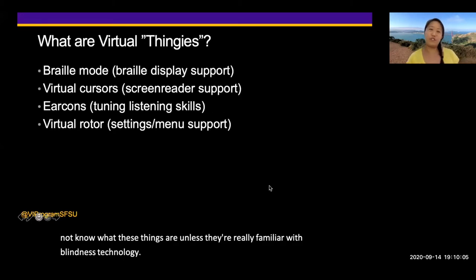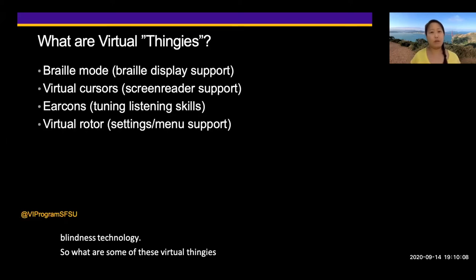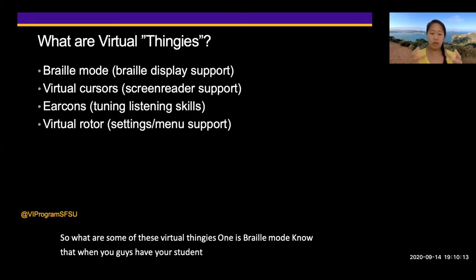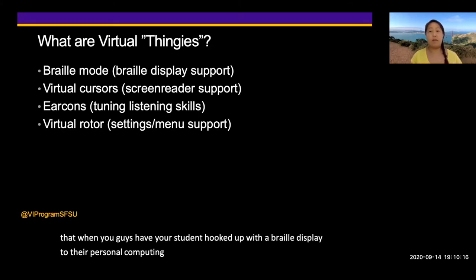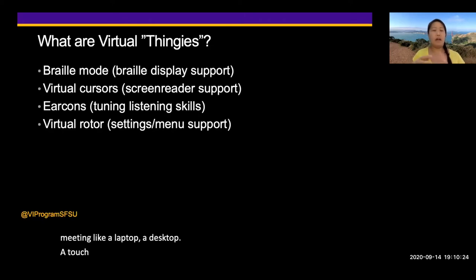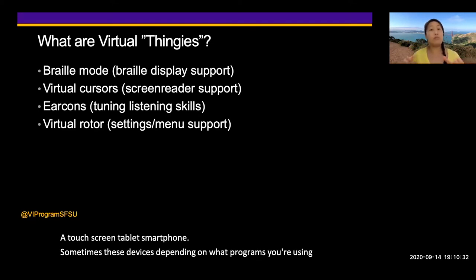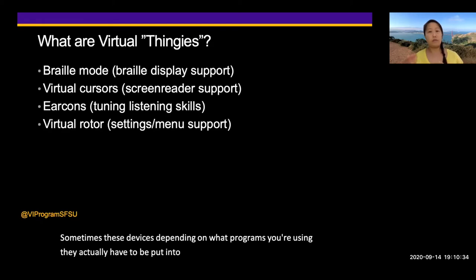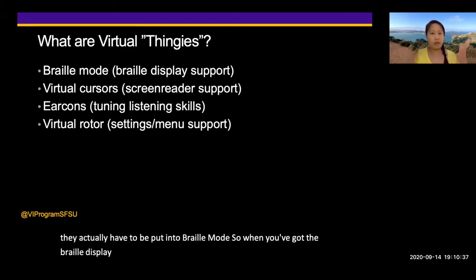The first virtual thingy is Braille mode. When you have a student hooked up with a Braille display to a personal computing device — a laptop, desktop, touchscreen tablet, or smartphone — sometimes these devices, depending on what programs you're using, have to be put into Braille mode so that when the Braille display is connected, the Braille will pop up correctly.